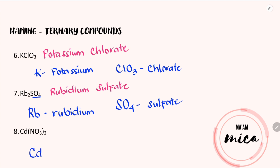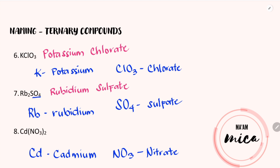Now let's proceed with number 8: Cd(NO₃)₂. Cd is the element symbol for cadmium, while NO₃ is the symbol for the polyatomic ion nitrate. Just like naming binary compounds, we will just copy the name of the first element, and also copy the name of the polyatomic ion. Therefore, the chemical name is cadmium nitrate.